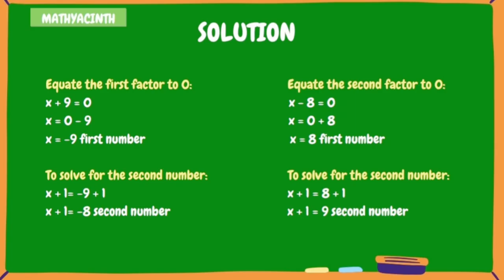Equate the first factor to 0. X plus 9 equals 0. X equals 0 minus 9, and x equals negative 9. Equate the second factor to 0. X minus 8 equals 0. X equals 0 plus 8, and x equals 8.